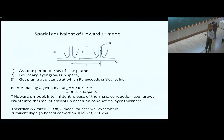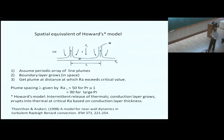One can define an average plume spacing, lambda. We found that the plume spacing decreases as you increase the heat flux. And if you look at Ra_lambda to the power of one-third, it goes like around 50 for Prandtl number one.